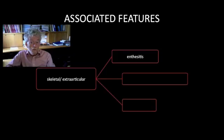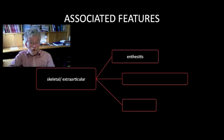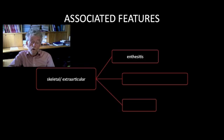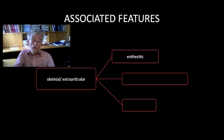In the musculoskeletal system, apart from the joints, we consider the entheses — the areas of insertion of tendons into bone — sites of inflammation that can occur in certain rheumatic diseases and cause problems, particularly at the Achilles tendon insertion and the plantar fascia insertion on the plantar surface of the heel or on the posterior aspect of the calcaneum. Entheses can also be inflamed at the knee, the elbow, and elsewhere.